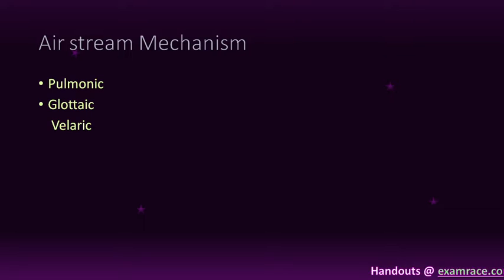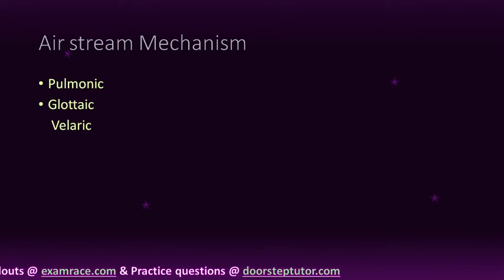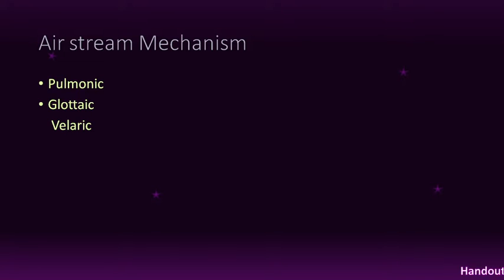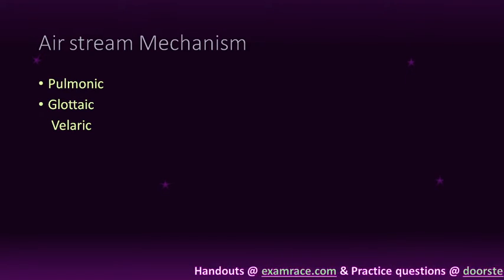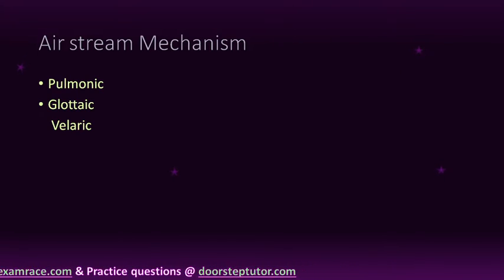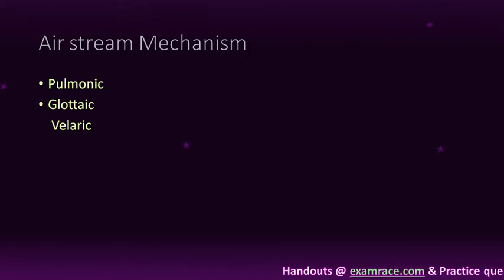The Pulmonic Airstream Mechanism is produced by the airstream mechanism. There are three airstream mechanisms in total: they are called Pulmonic, Glottalic, and Velaric Airstream Mechanisms. Since a very large percentage of speech sounds in all languages of the world use the Pulmonic Airstream Mechanism, most languages use it, so we shall look into the Pulmonic Airstream Mechanism first.